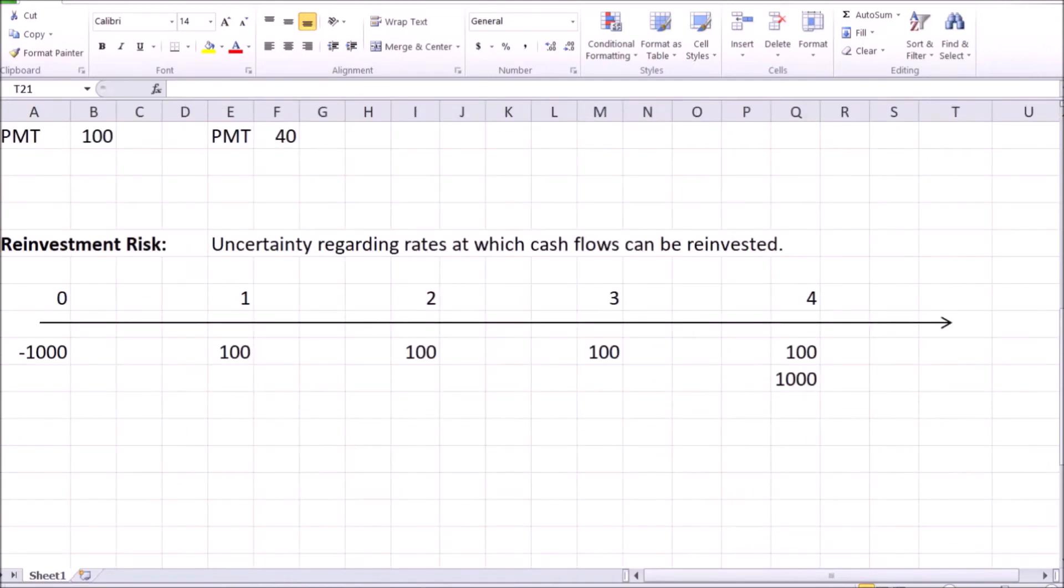Imagine you've found an interesting attractive bond which pays a coupon payment of $100, or 10% of the face value which is $1,000, and the bond matures in four years. You were lucky enough to buy it for $1,000, meaning that the yield to maturity you're earning is 10% per year. By the way, whenever the price is equal to the face value, yield to maturity is always equal to the coupon rate.